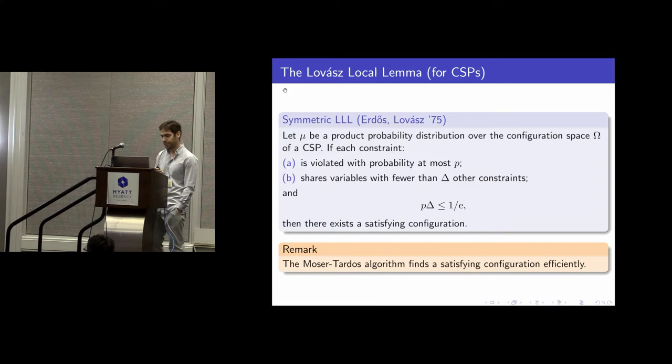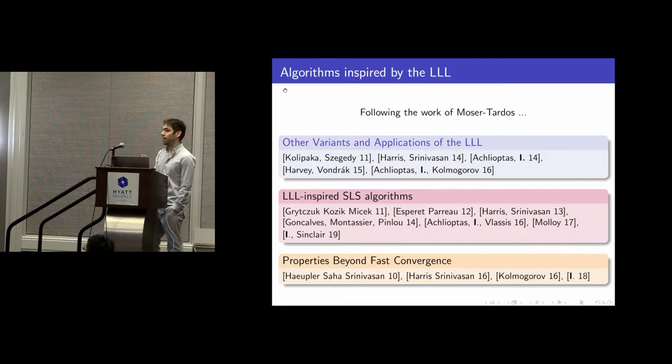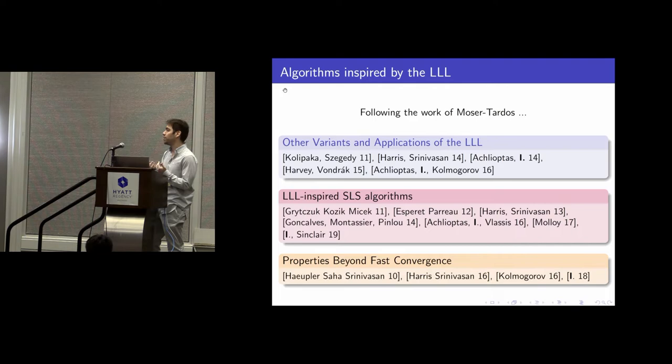Naturally, after such a breakthrough, there have been a lot of results and work trying to generalize and extend their techniques in different settings and algorithms. For example, what if the distribution mu that you use is not a product distribution, or what if you want to analyze an entirely different algorithm?